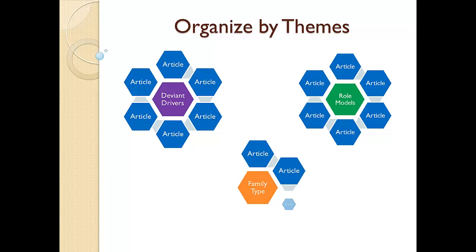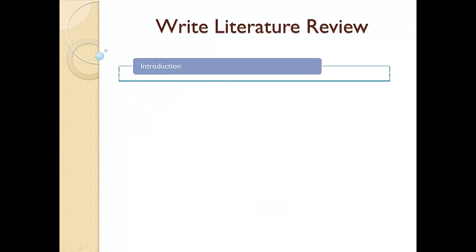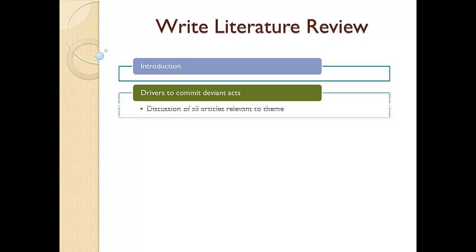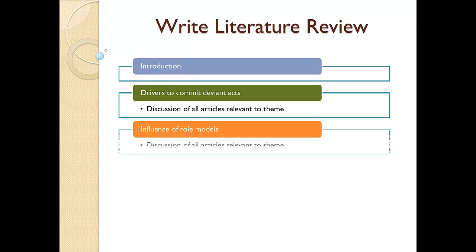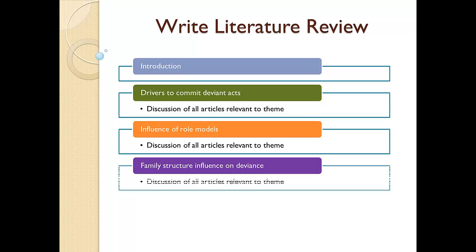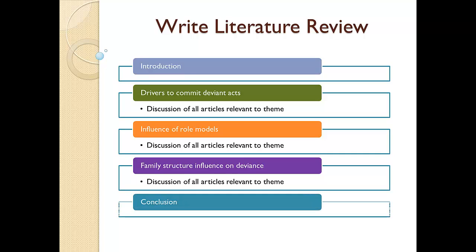Now I'm ready to start writing my literature review. I want to begin with an introduction section that briefly explains my research topic, the types of resources I looked at when searching for information, and anything else that might be relevant. I then discuss my information by the themes or groups I identified earlier. I want to wrap up my literature review with a short conclusion where I highlight any major points that might have emerged.